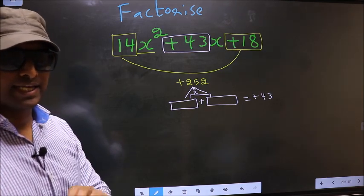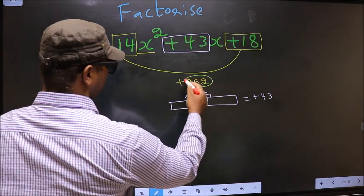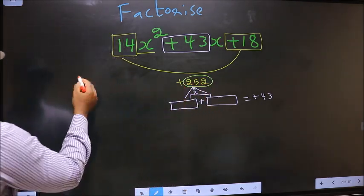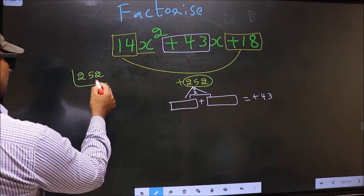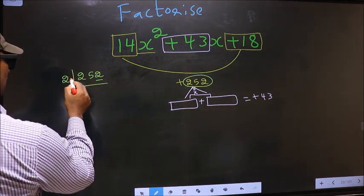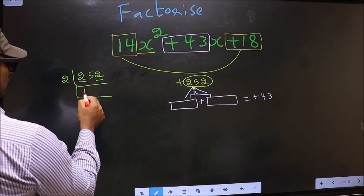To get those 2 numbers, we should take LCM of 252. So I take the LCM here, 252. The last digit 2, even, so we take 2 here. The first number 2, when do we get 2 in 2 table? 2 × 1 is 2.